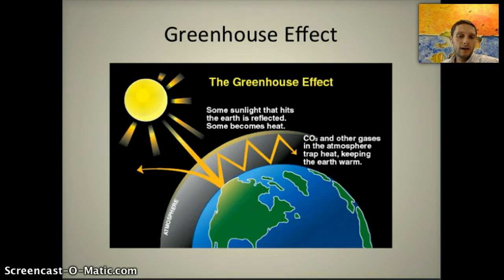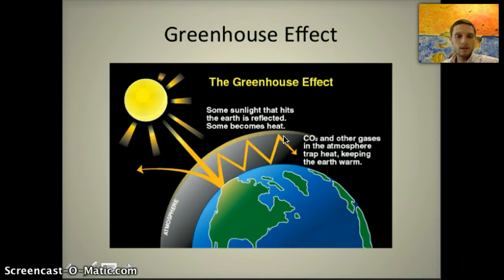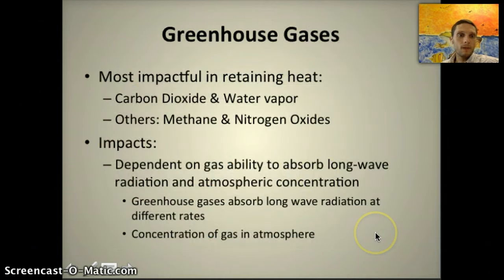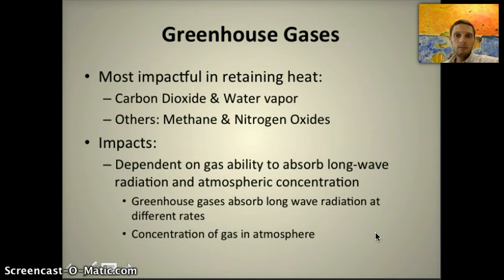Other greenhouse gases that help trap the sun's warmth within our atmosphere include carbon dioxide, water vapor, methane, nitrous oxide, and chlorofluorocarbons from aerosol cans. The two most impactful in retaining heat are carbon dioxide and water vapor; others include methane and nitrous oxides. Their impact depends on each gas's ability to absorb long wave radiation and on atmospheric concentration.